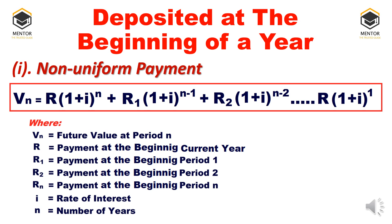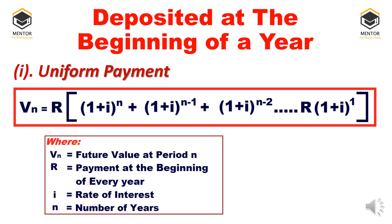N is the number of years. Any non-uniform cash inflows deposited at the beginning of the year can be calculated using this formula. For uniform payments, we have two formulas. In the first, when payments are uniform, R is taken as the common value multiplied by the summation of (1+i)^n + (1+i)^(n-1) + (1+i)^(n-2) and so on till (1+i)^1. We take R as common and sum the remaining factors.